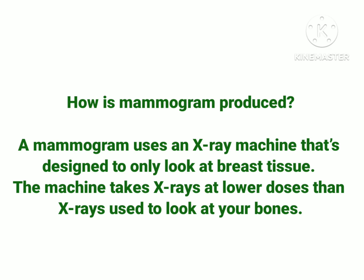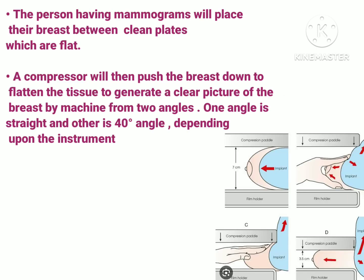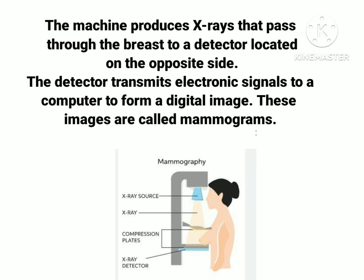Now let's discuss how a mammogram is produced. This mammogram uses an x-ray machine designed to look only at breast tissue, using low x-ray doses — unlike a general x-ray machine that uses high radiation doses to visualize bones and other soft tissues. In the first step, the person having a mammogram places their breast between clean flat plates. A compressor above pushes the breast down to flatten the tissue so that a clear picture is generated. The machine takes pictures in two angles: one straight, and another at a 40-degree angle, captured when the machine is rotated 40 degrees.